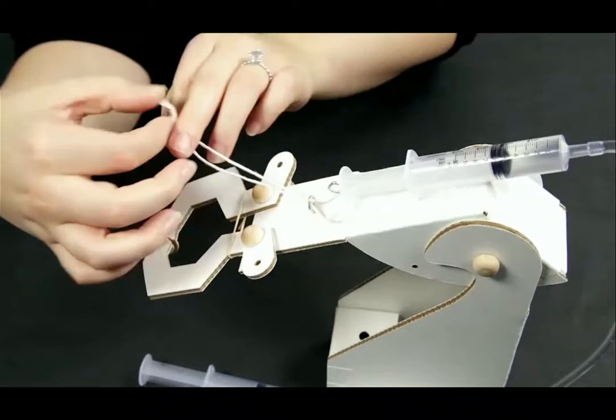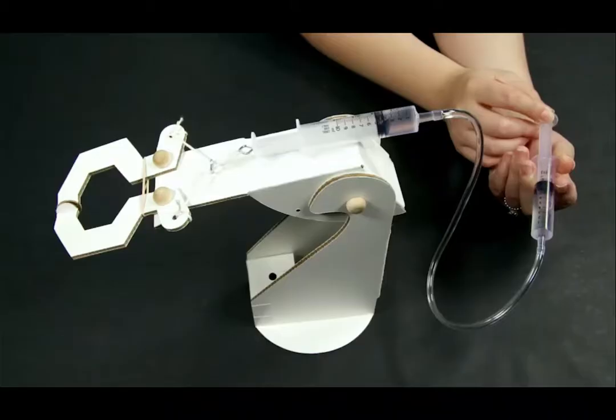Step 32: Feed each end through the hole in the end of the robot finger and tie off.